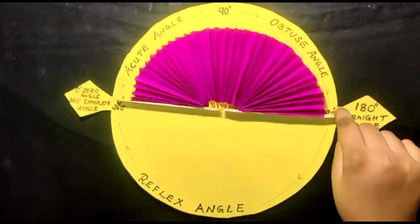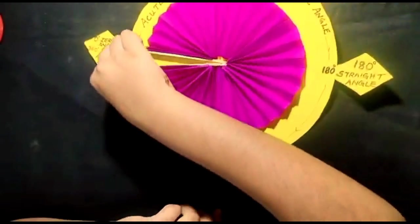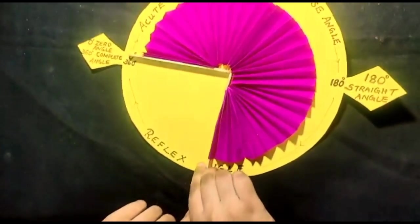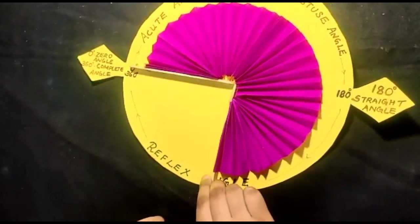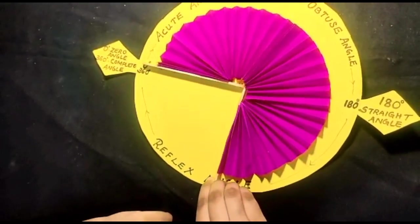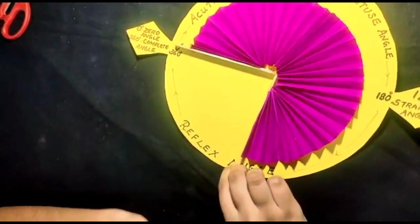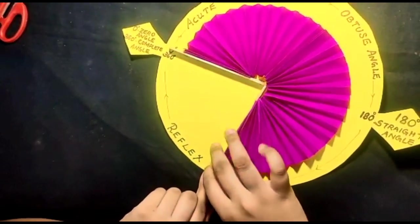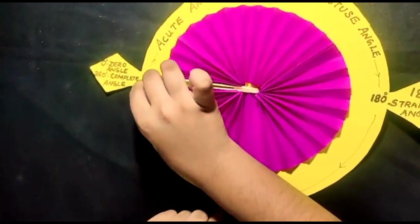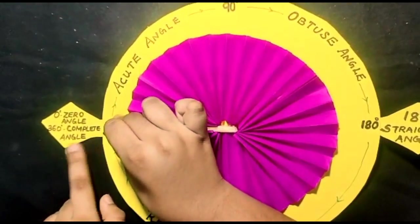Between 180 degree and 360 degree, it is reflex angle. Examples are 181, 182, 200, 210, 230 and etc. When it is at 360 degree, it is complete angle.